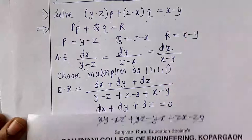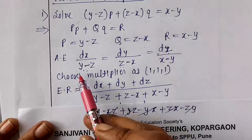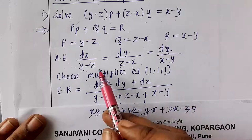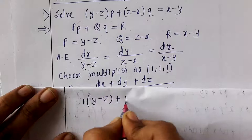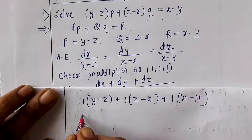We have to choose multipliers such that the denominator becomes zero. If we choose multipliers as 1, 1, 1, we check: 1×(y − z) + 1×(z − x) + 1×(x − y). The z terms cancel, the x terms cancel, and the y terms cancel, giving zero.